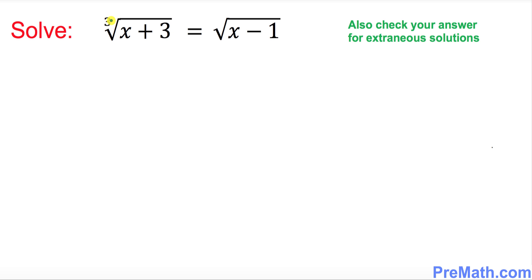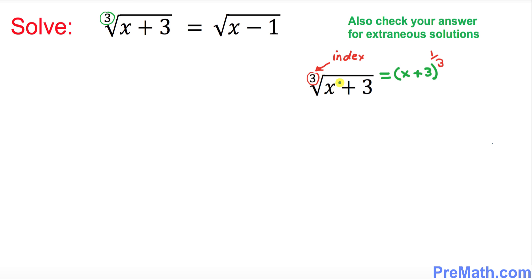The very first step — look at the left hand side of this equation. Could you tell me what is the index of this radical? As you can see, the index of this left hand side radical is 3. This is in radical form, and if you want to convert it into exponential form you simply write x plus 3 to the power 1 over 3.